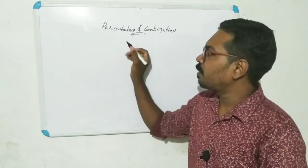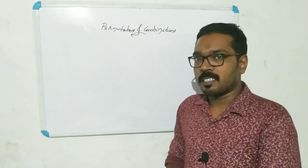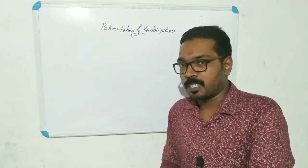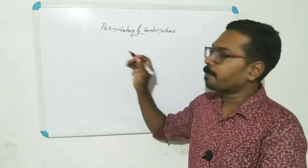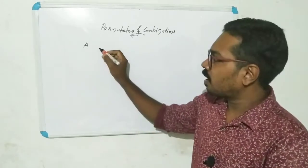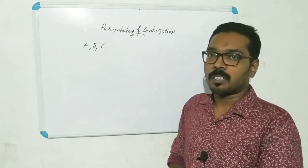Permutation is just arrangement. It is arrangement, permutation. I will tell you, there are three letters: A, B, C. There are three letters.